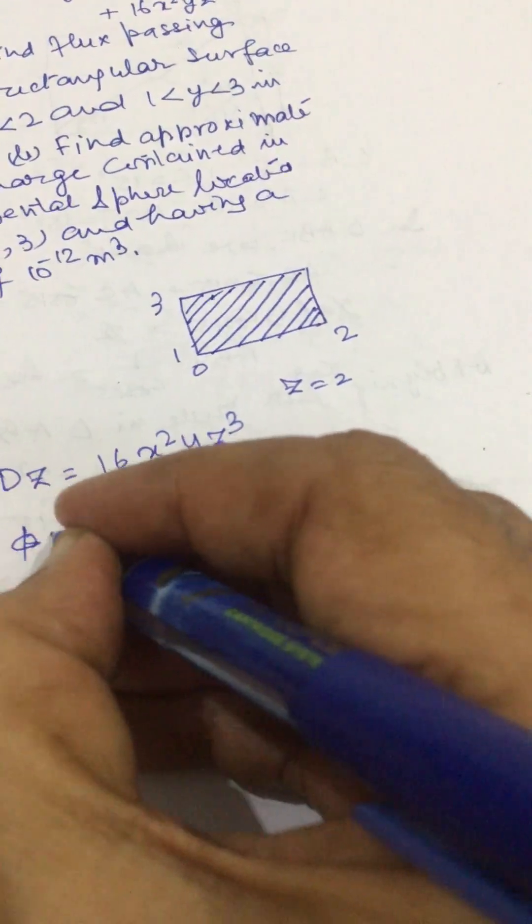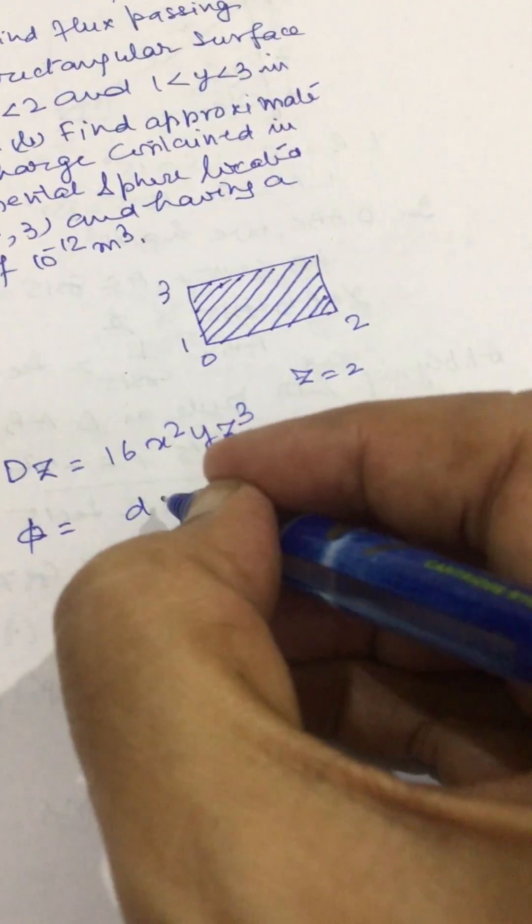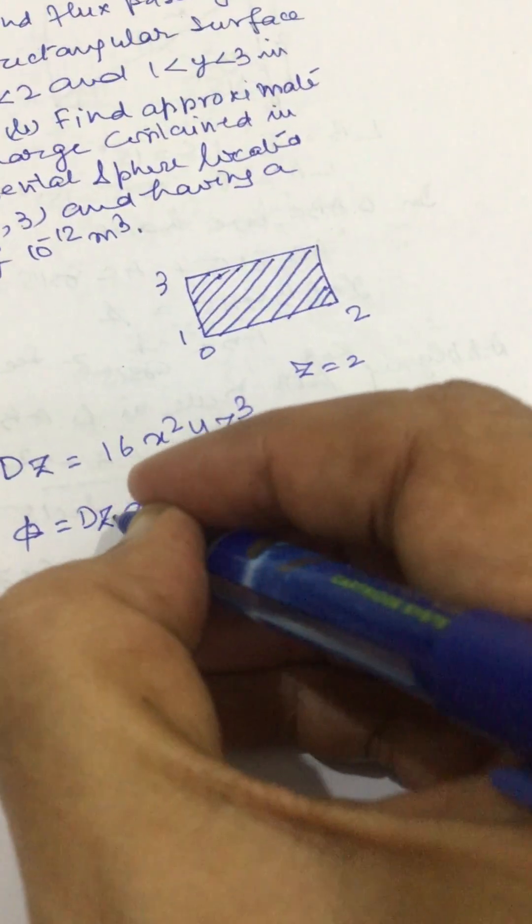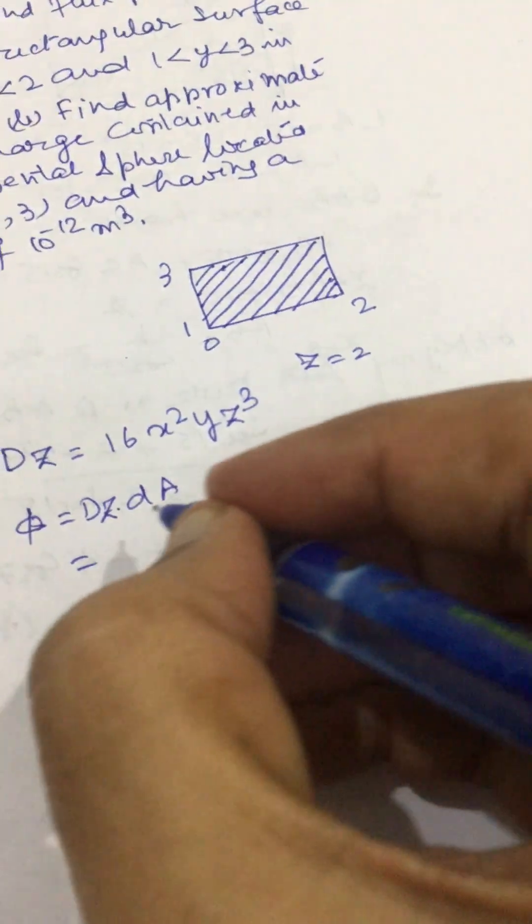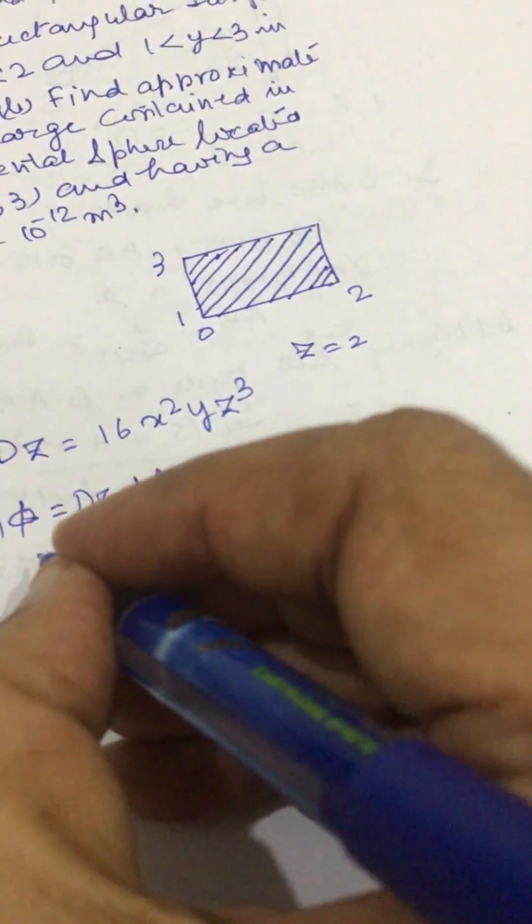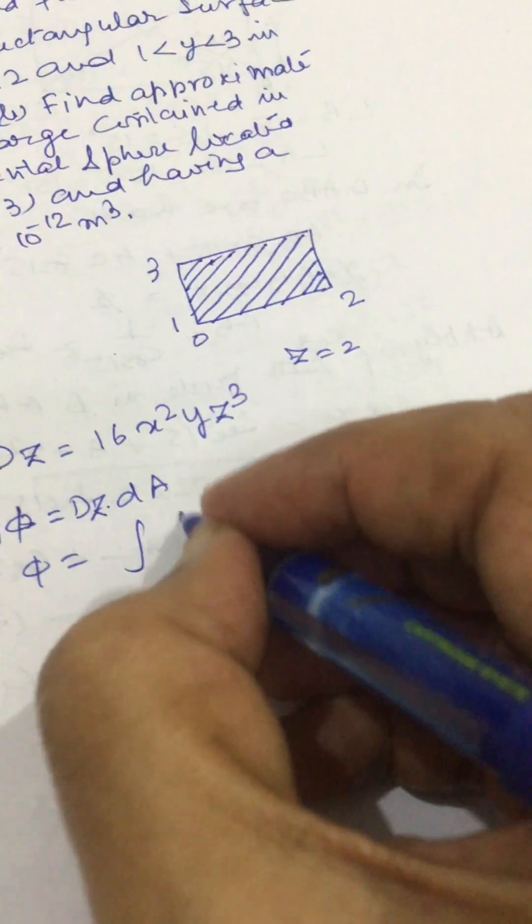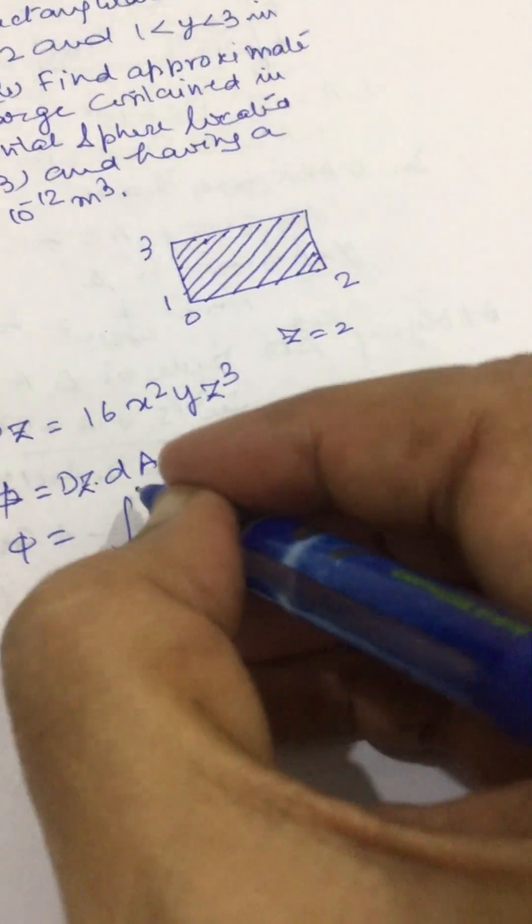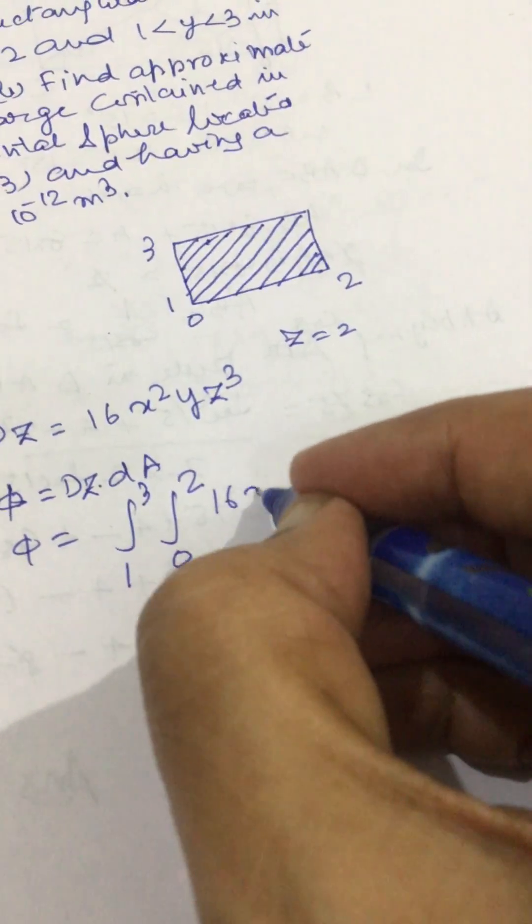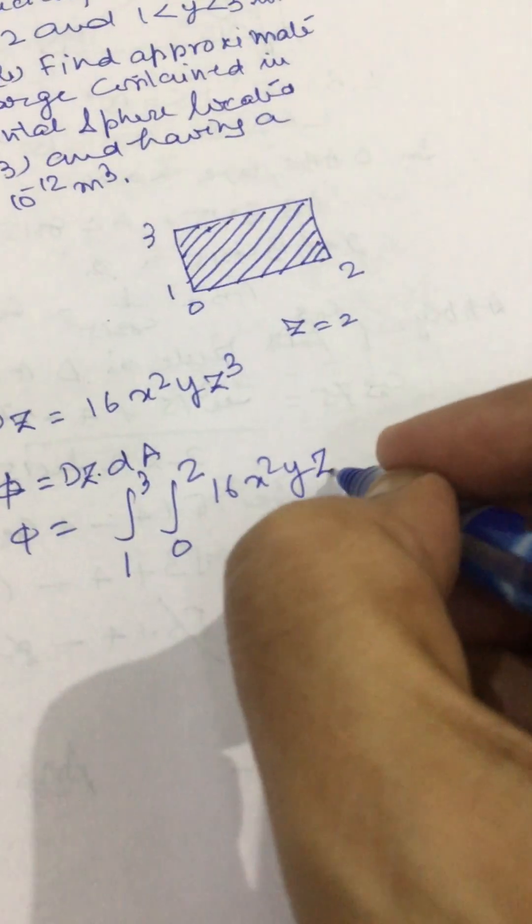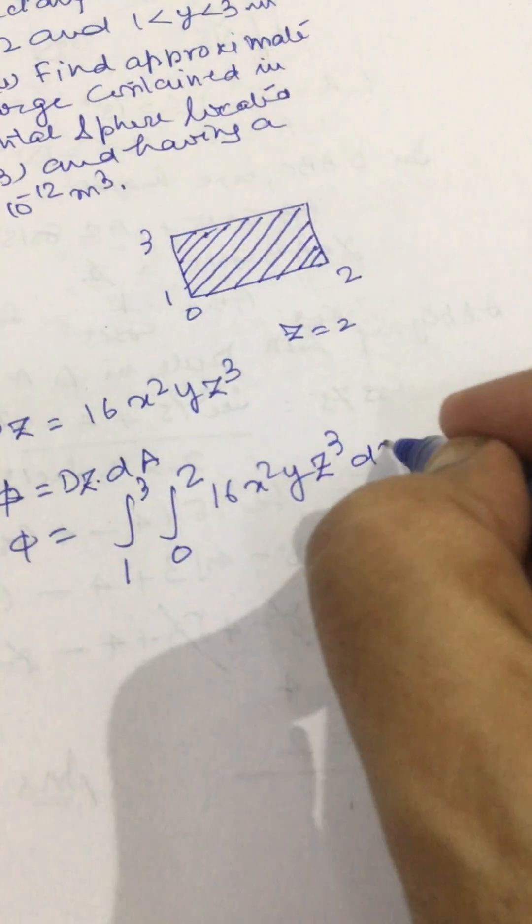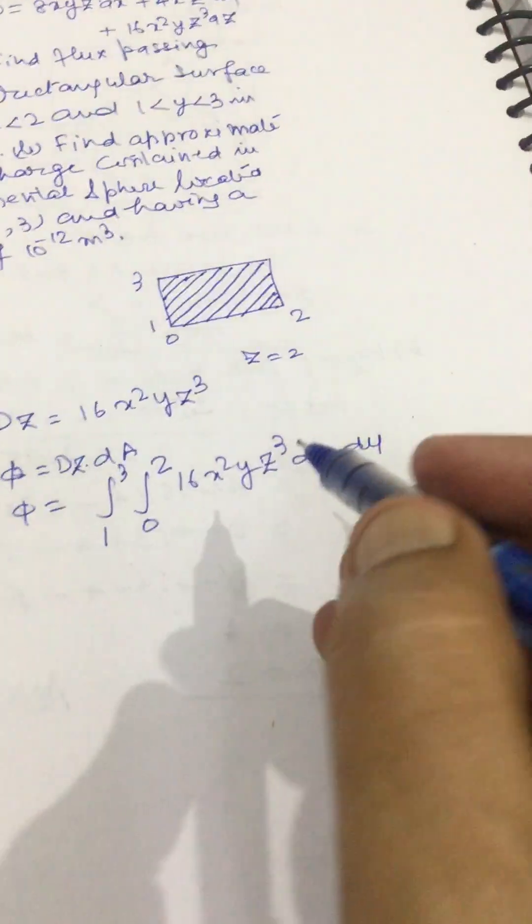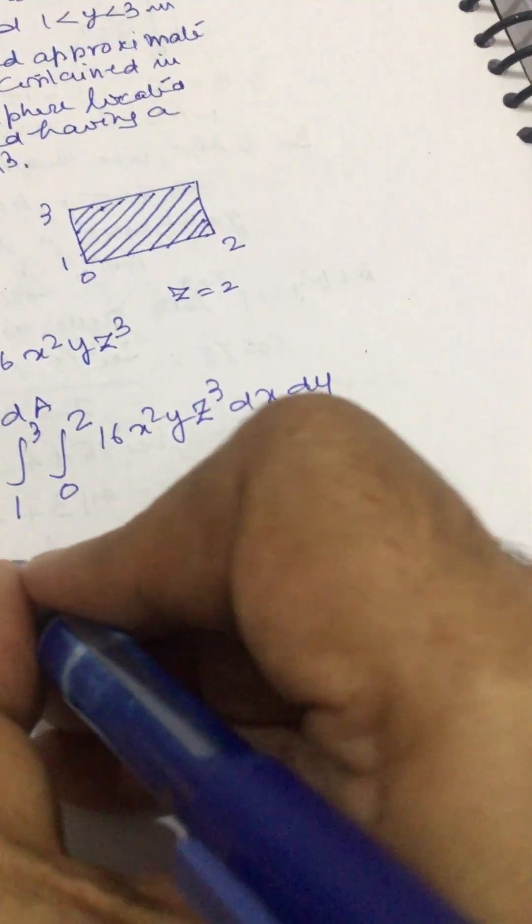Flux will be given by the integral of dA into D_z. Phi will be given by integral x varying from 0 to 2 and y varying from 1 to 3, and D_z is 16xy/z^3 dx dy.